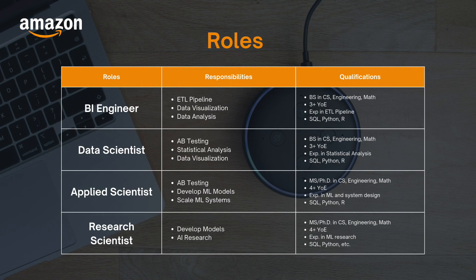Probably the most prized role at Amazon — especially for those with experience in ML theory and research — is the Amazon Scientist role. Think of them as AI researchers. They develop state-of-the-art techniques and models, conduct AI research, and find implementations across various functions like supply chain optimization using deep learning. Qualifications include MS or PhD, four years of experience, ML research experience, and programming language knowledge.